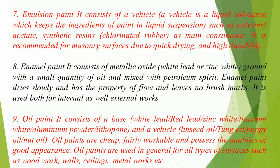7. Emulsion paint: It consists of a vehicle — a liquid substance which keeps the ingredients of paint in liquid suspension — such as polyvinyl acetate, synthetic resins, and chlorinated rubber as main constituents. It is recommended for masonry surfaces due to quick drying and high durability. 8. Enamel paint: It consists of metallic oxide, white lead or zinc white, ground with a small quantity of oil and mixed with petroleum spirit. Enamel paint dries slowly, has the property of flow, and leaves no brush marks. It is used both for internal and external works.